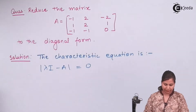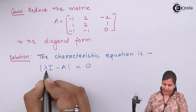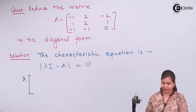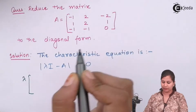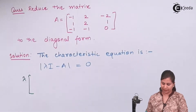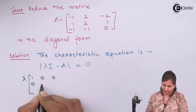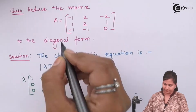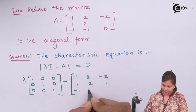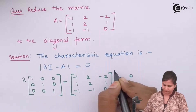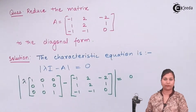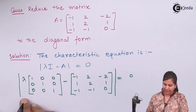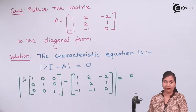So first we will find out the characteristic equation. We compute λI — that is λ multiplied with the identity matrix. Because matrix A is a 3×3 matrix, we take the 3×3 identity matrix here, then subtract A. We have to find the determinant of this. We will multiply λ with the identity matrix, then subtract matrix A, and then find the determinant.